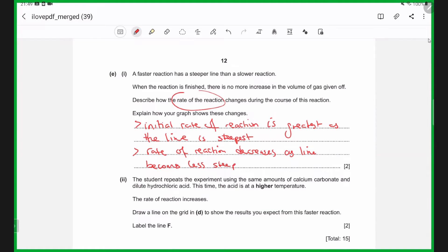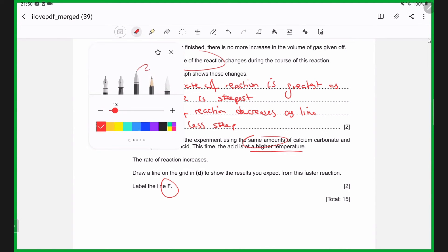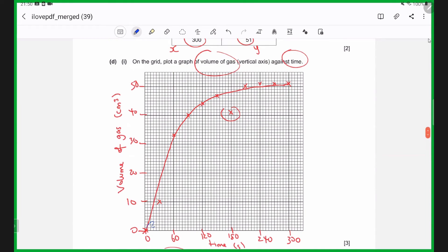For the final part, we're going to draw a line F, in which the reaction is performed at a higher temperature, but using same amounts of calcium carbonate and hydrochloric acid. Now I'm going to use blue to show you the new line, which is even steeper, as it's faster. It's above the original line, but we plateau at the same point because we use the same amount of reactants to start with, and then label this line F.